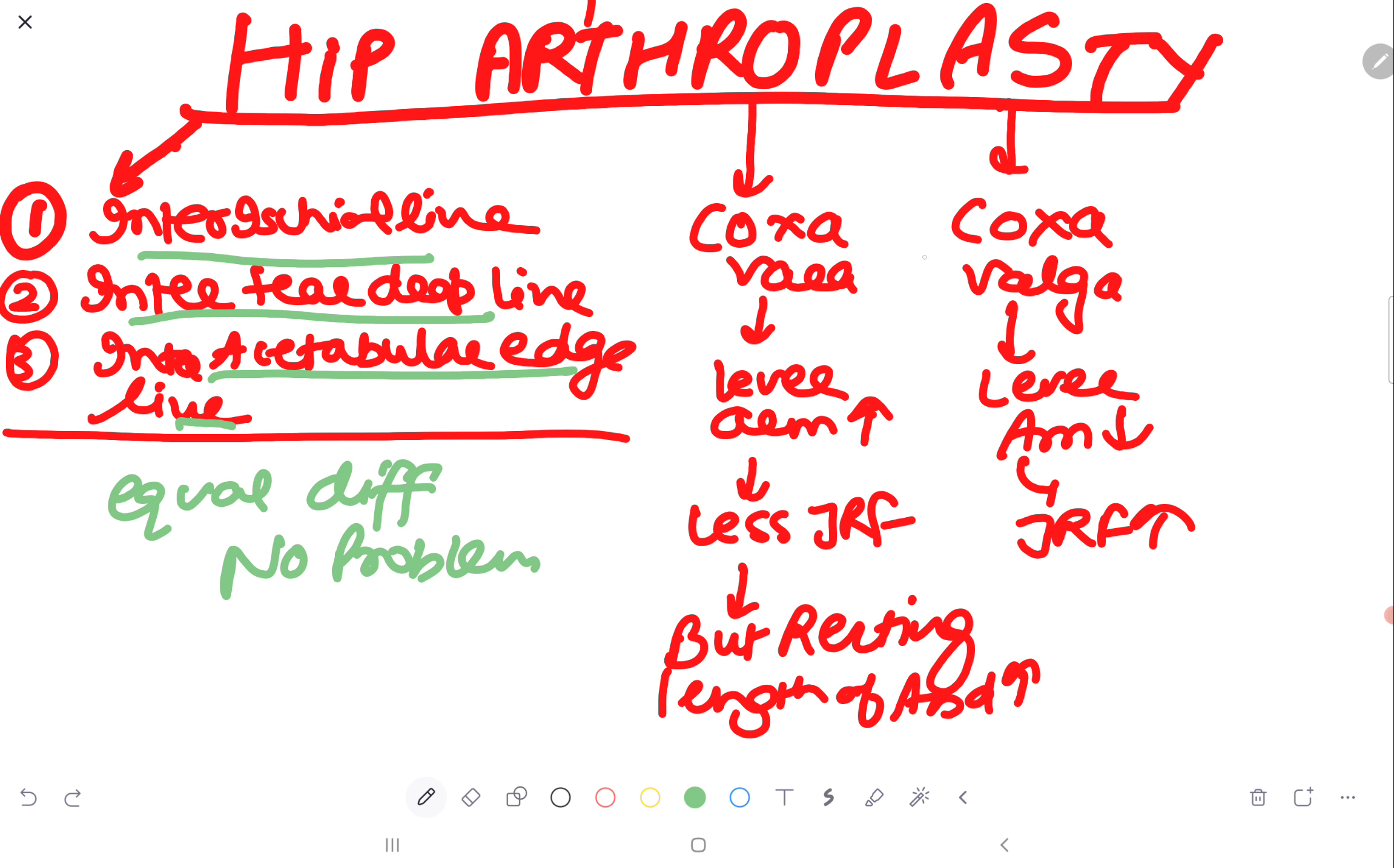Then there is coxa vera and coxa valga. Now you know what is coxa vera. Coxa vera is less than 120 degree angle. Now in the coxa vera, what happens? GT becomes proximal, goes to the proximal side and there is less lever arm. So less joint reaction force is there, but resting length of abductors is increased. So here is the problem. Even joint reaction force is decreasing, but resting length of the abductor muscles is increasing.